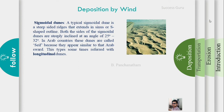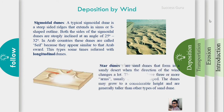The last dune type is the star dune. Star dunes form when wind blows from multiple directions rather than a single direction. They have multiple arms radiating outward, forming a star shape.